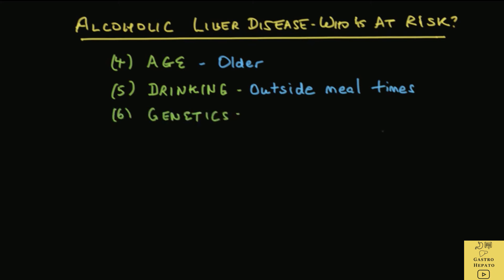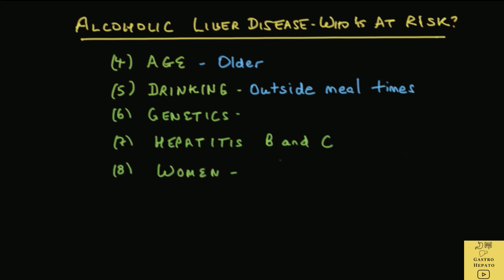Genetics also plays a role — alcoholism and alcoholic liver disease runs in families and genes are believed to play a role. The risk is also increased if the patient has viral chronic hepatitis B or C. Women are at increased risk because they break down alcohol more slowly than men. Being overweight or obese is another risk factor.